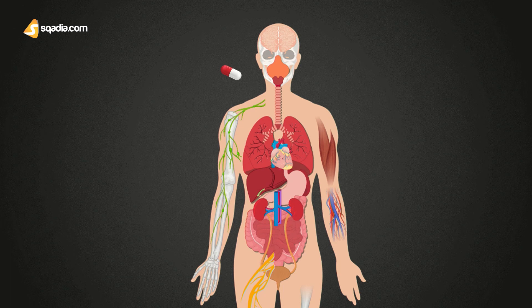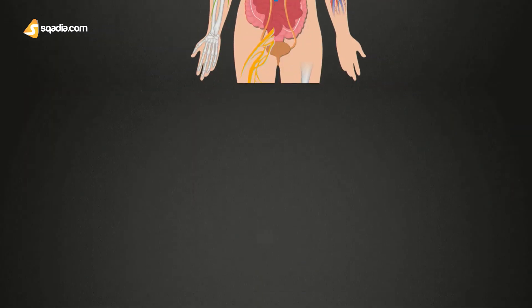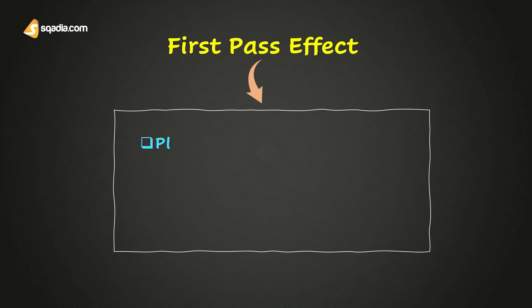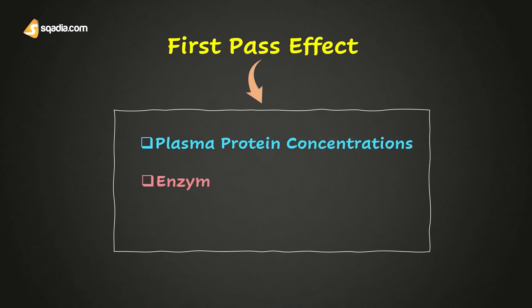The first-pass effect may also occur in the lungs, vasculature, gastrointestinal tract, and other metabolically active tissues in the body. This effect can become augmented by various factors such as plasma protein concentrations, enzymatic activity, and gastrointestinal motility.